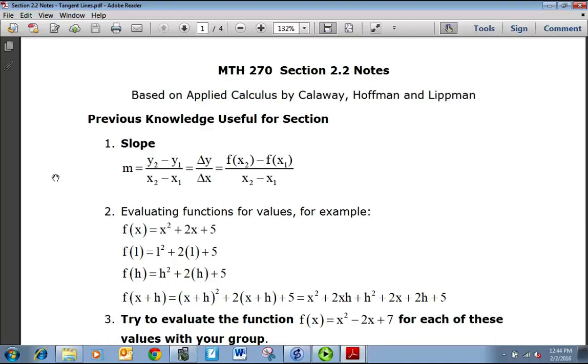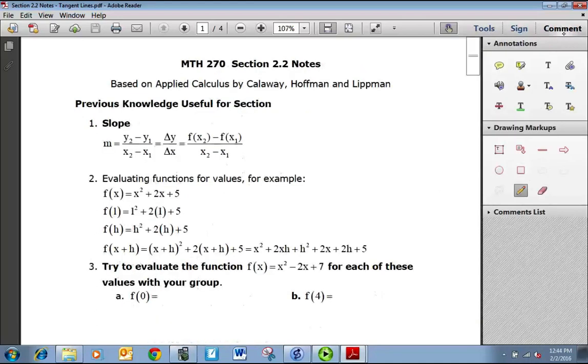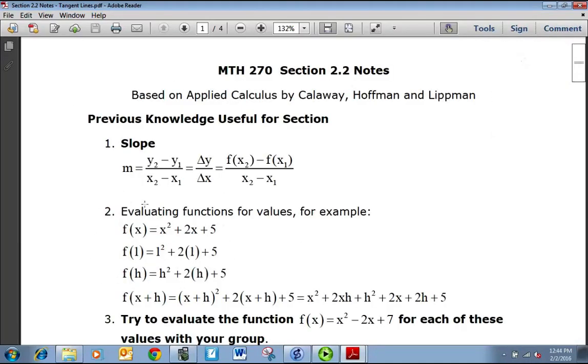Some previous knowledge that's useful for this section is to really understand slope. Slope comes in many forms. When we're talking about the equation of a line, we refer to slope as m. To find slope with two points, we subtract the y values and divide by the difference of the x values, which is another way of saying delta y over delta x.